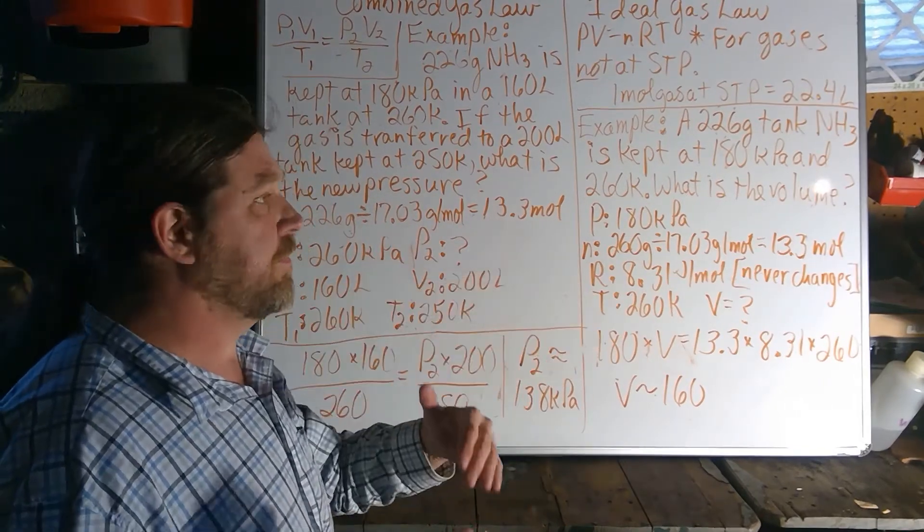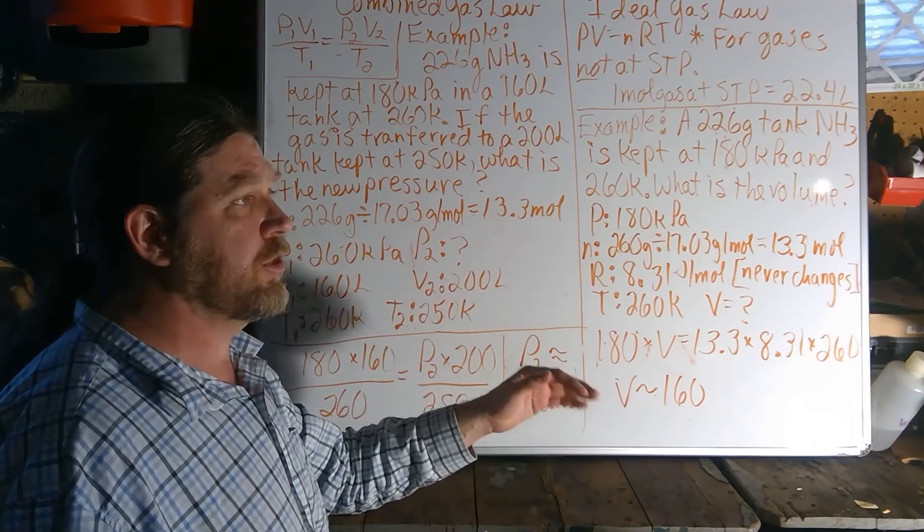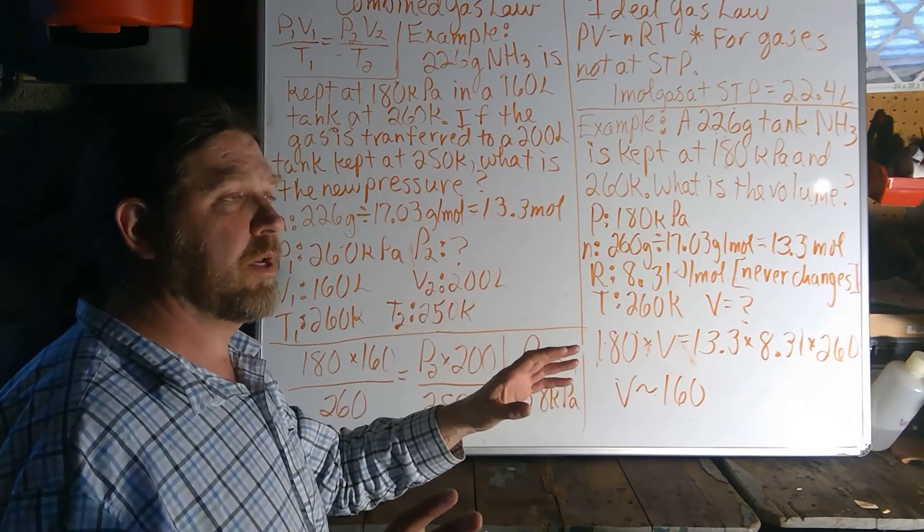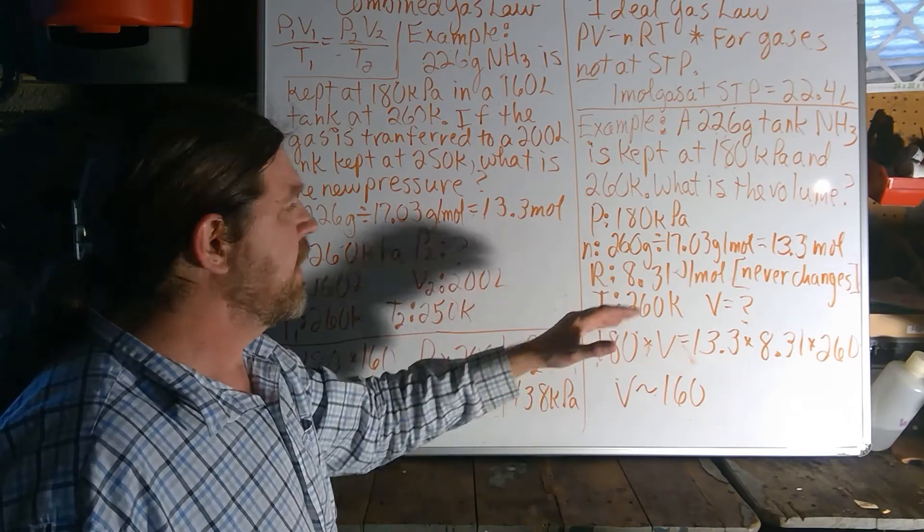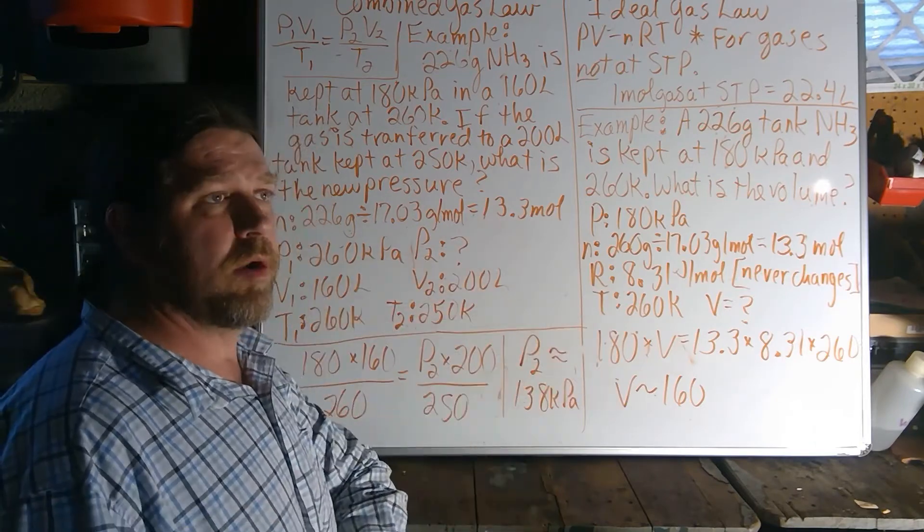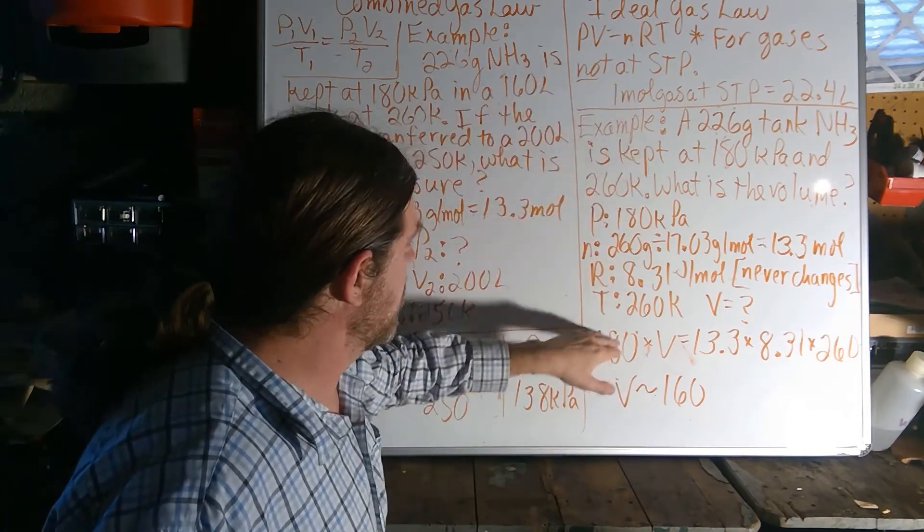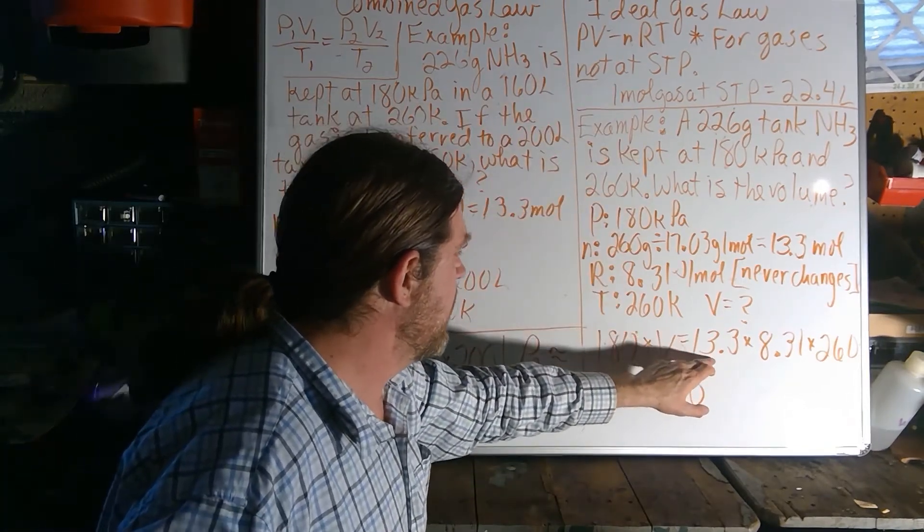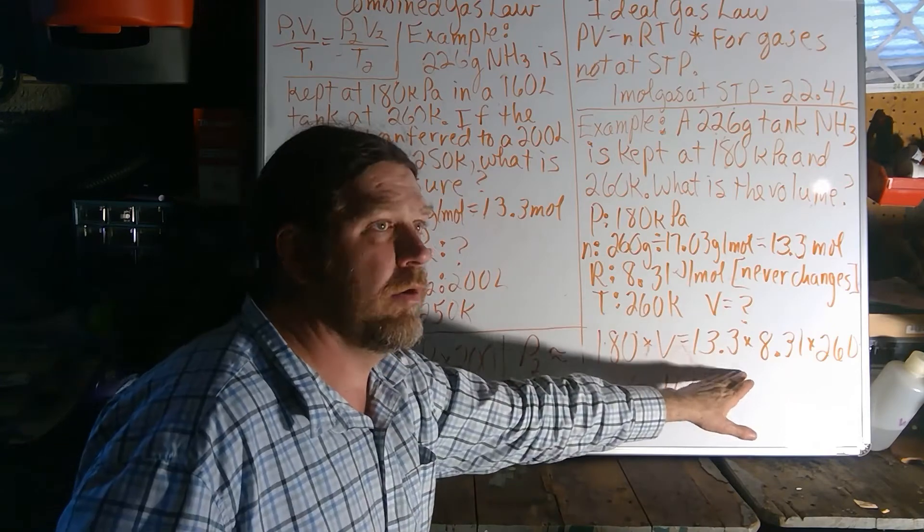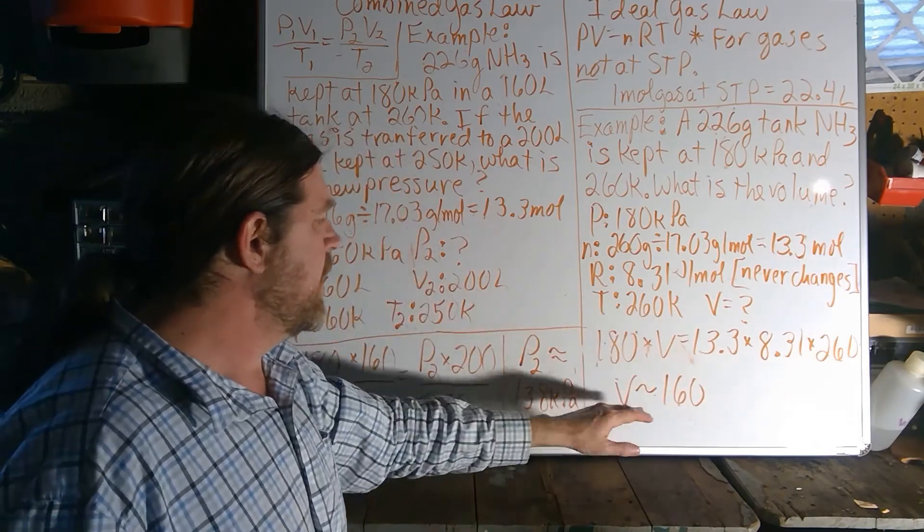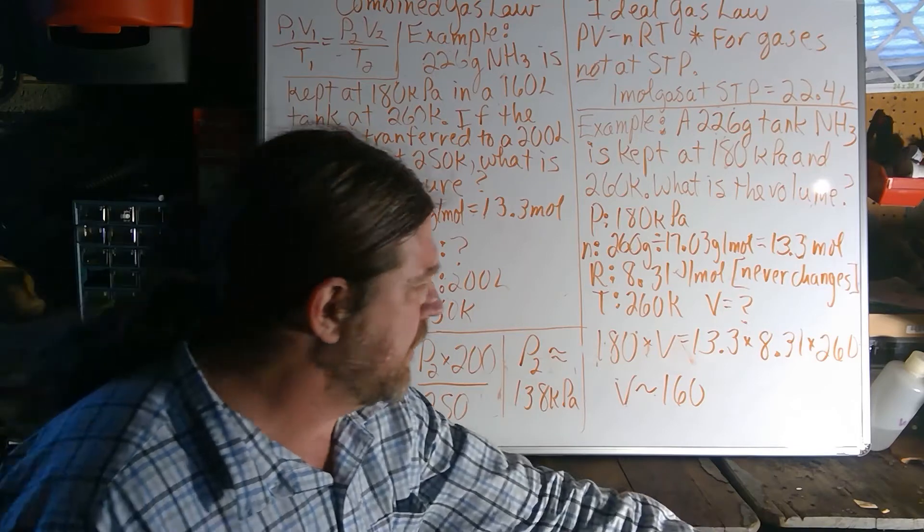Our gas constant is available on your reference sheet. It never changes. If it's in kilopascals, which is what we mostly work with, it's just 8.31. Our temperature's already in Kelvin, so we don't have to convert that. We just plug in our values on this PV=nRT, take our known side, divide by the unknown, and we get a volume of 160 liters.